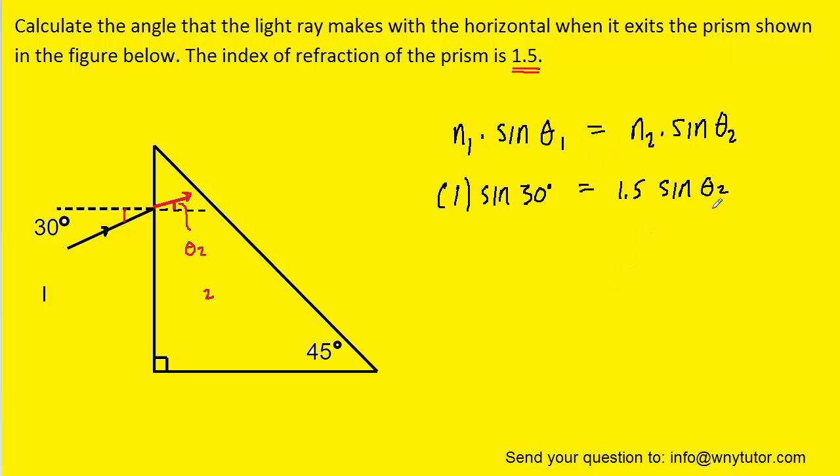Now in order to solve for theta 2, we can divide both sides of the equation by 1.5. Then we'll have to take the inverse sine of both sides of the equation so that we can isolate theta 2. And when we compute the left-hand side, we can see that theta 2 turns out to be approximately 19.47 degrees.